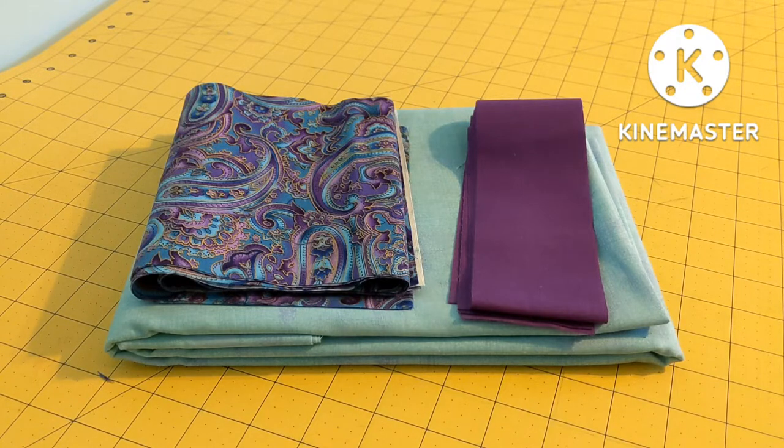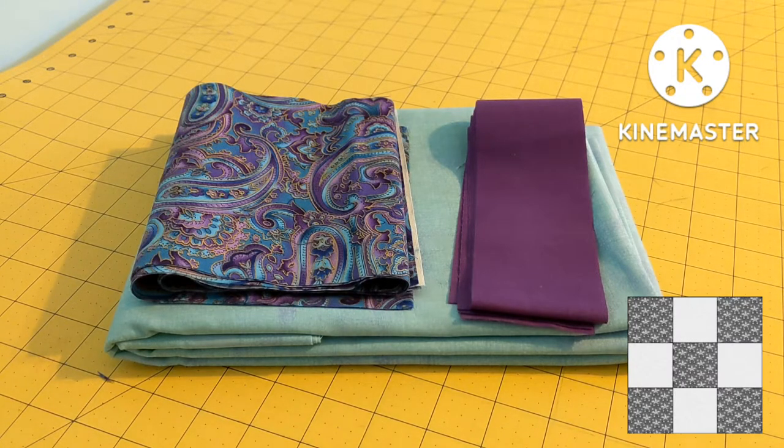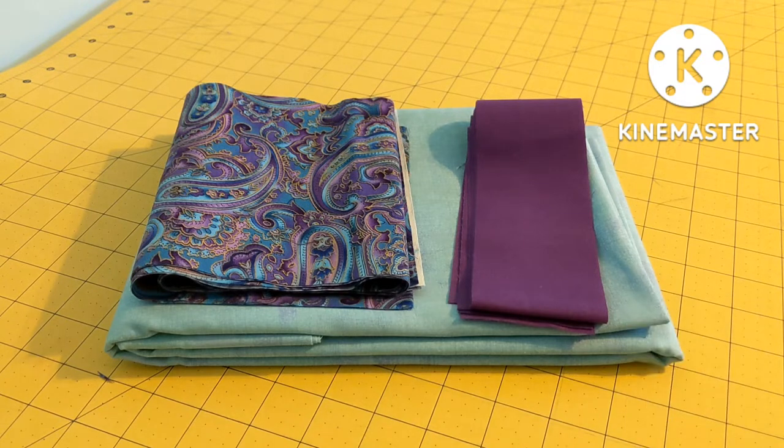This quilt has two blocks. The first block is a simple nine patch and the second block is a solid square. When these blocks are alternated in horizontal rows they form this pattern.